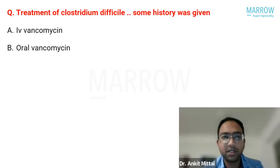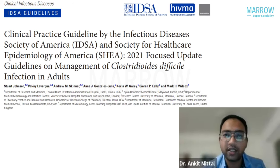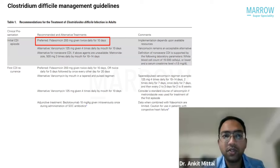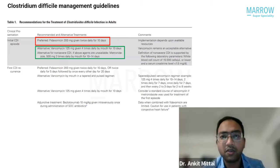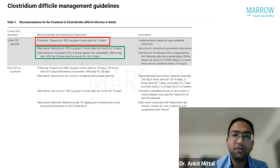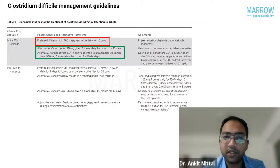Starting with the first question: treatment of Clostridium difficile. The confusion is usually about the route of vancomycin — it's always oral. Reviewing the latest 2021 guidelines: if fidaxomicin is in the options, fidaxomicin is the treatment of choice for the first episode. Alternative treatments include oral vancomycin, and if vancomycin is not available, metronidazole can be given orally. Fidaxomicin and vancomycin are always oral; metronidazole is preferably oral.